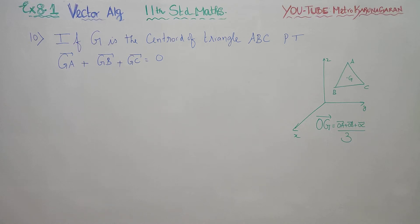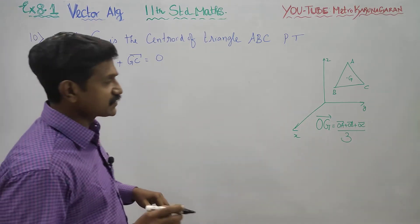Dear Learn Standard students, in exercise number 8.1, sum number 10: if G is the centroid of triangle ABC, prove that GA vector plus GB vector plus GC vector equals 0.